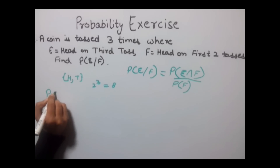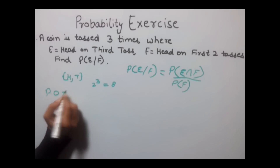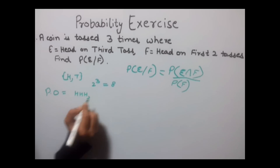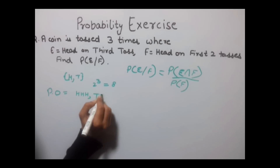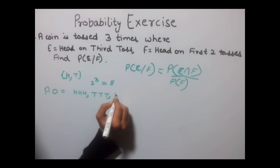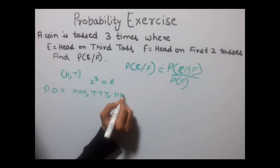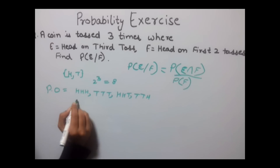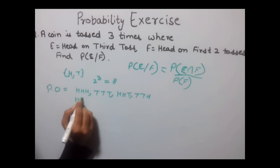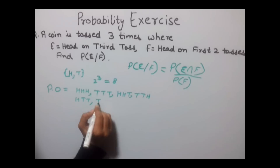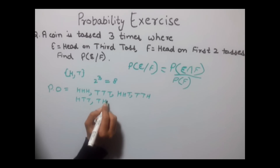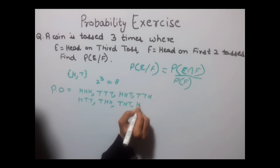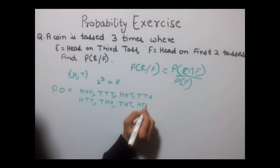The possible outcomes are: HHH, TTT, HHT, TTH, THH, HTT, HTH, and THT. These 8 outcomes form the complete sample space.